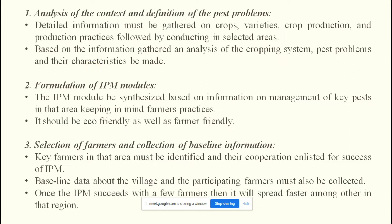The second step is formulation of the IPM module. After gathering information about the crop, protection practices, and key pests, you have to formulate an IPM module — a management strategy for key pests in that area. Keeping farmers' existing practices in mind, we have to modify them in a way that is helpful to the farmer, but it must be both eco-friendly and farmer-friendly. We have to think about both the environment and the farmer's immediate need to manage pests.